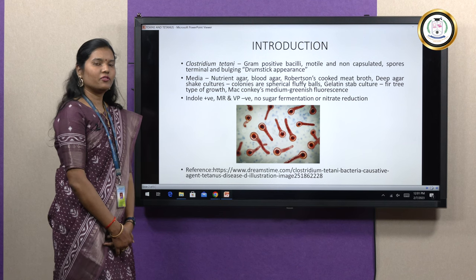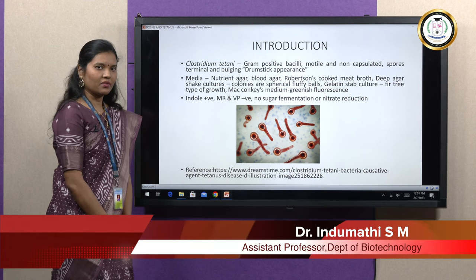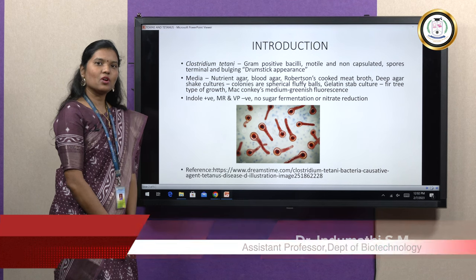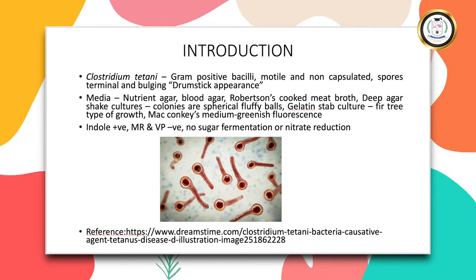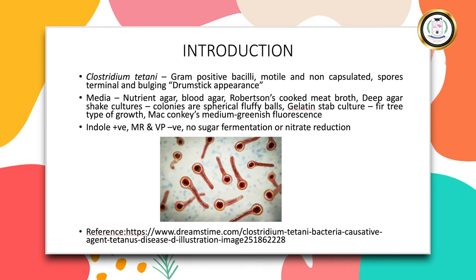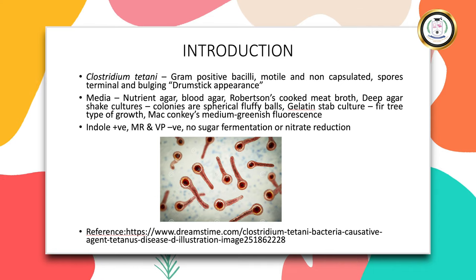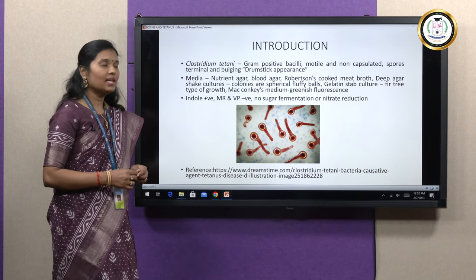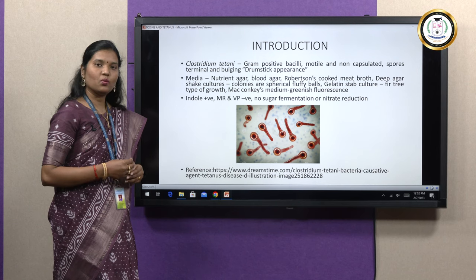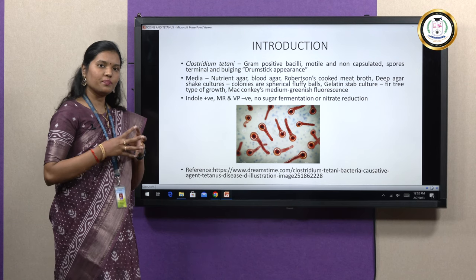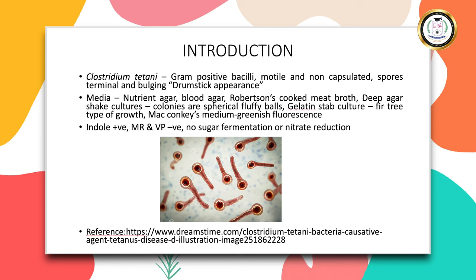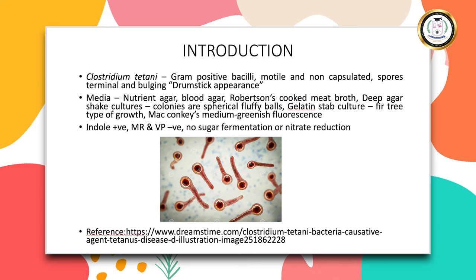Firstly, we will look into the morphology, cultural characteristics and biochemical reactions of Clostridium tetani. Tetanus is a disease commonly caused by Clostridium tetani, which is a soil bacterium. It is gram positive bacilli shaped organisms. They are motile with peritrichous flagella — that is, flagella all over the cell — and they are non-capsulated while being sporing, meaning spores are present at the terminal ends of the bacilli giving a characteristic drumstick shape appearance.